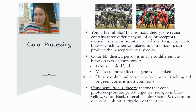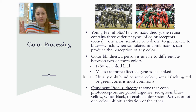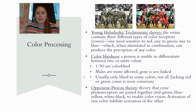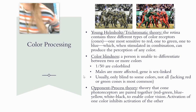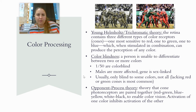Color processing — there are different theories of how we process color. One is the Young-Helmholtz, also known as the trichromatic theory. This theory says that we have three different types of cones, each specifically sensitive to a certain wavelength: one sensitive to red, one to green, and one to blue. When they're stimulated in combination, they can produce the perception of any color. The trichromatic theory is similar to how we produce color on a TV — mixing different wavelengths can create a color like purple, for example.